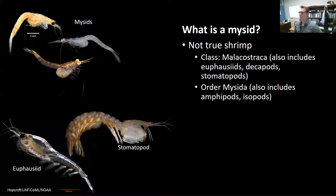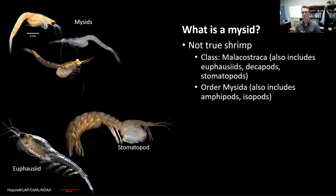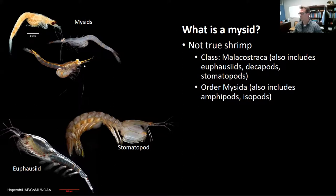So what is a mysid? As Bronwyn has pointed out, mysids are not true shrimp. They belong to the class Malacostraca. That class does include euphausids, as well as the decapod shrimps and really cool animals, the stomatopods. But mysids belong to the order Mysida, which also includes amphipods and isopods and some other really cool animals. If we look at this figure, we can see mysids in the upper left, and some other Malacostracans in the lower left — the euphausids and the stomatopods.